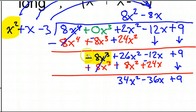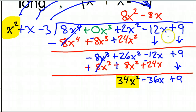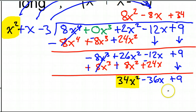One more time we start over, and 34x squared is the new first term. I ask myself: x squared times what is going to give me 34x squared? Clearly x squared times 34 gives 34x squared. So I put a plus 34. When you get to the constant, you know you're at the end of the line — anything left after this is going to be the remainder.